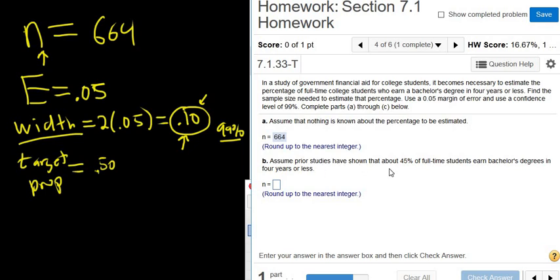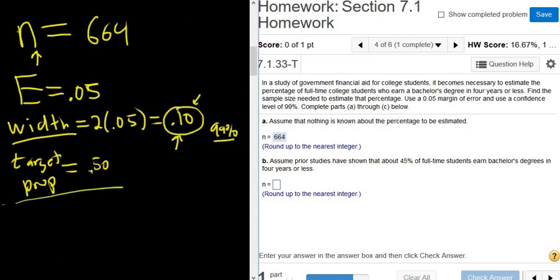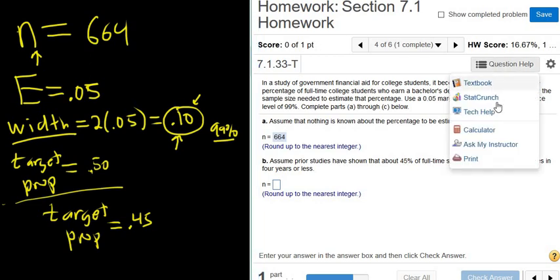Assume prior studies have shown that about 45% of full-time students earn bachelor's degrees. Okay. So now, for the next part, what they're doing is they're giving us the target proportion. Right. They're telling us that the target proportion is 0.45. That's what we expect. So now we have to change that. That's the only difference.